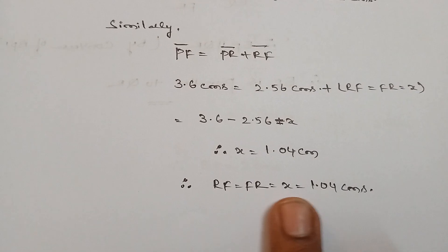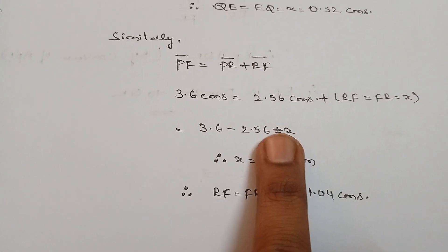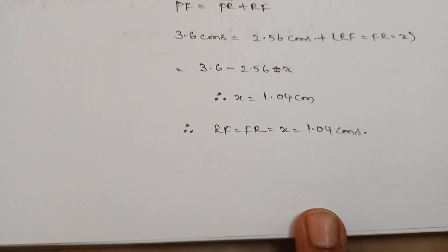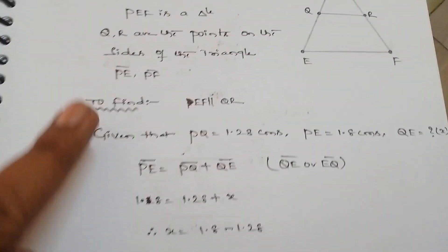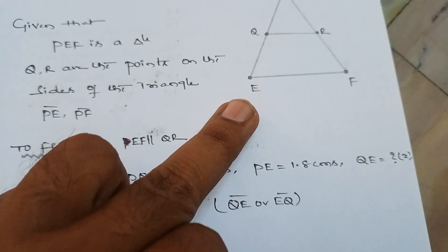And we get RF value is nothing but 1.04 after substituting, after simplifying. Okay, then see, guys, to know whether QR is parallel to EF, first of all we should know all the dimensions of the triangle, right?